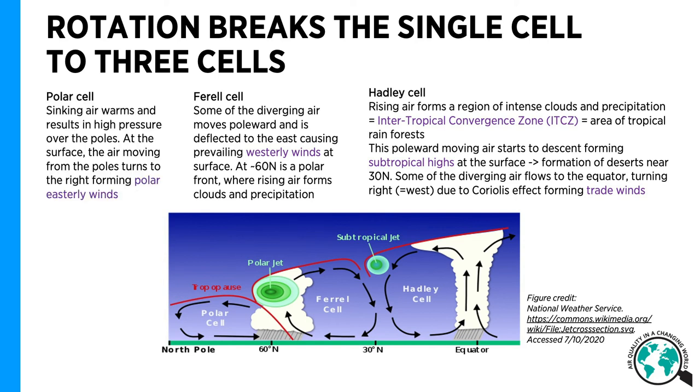At the poles, the cold air descends and causes high pressure over the poles. At the surface, the air moving from the poles turns to the right, forming polar easterly winds.